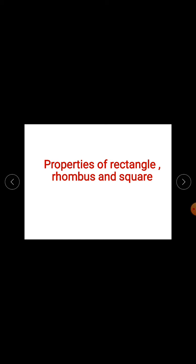let us continue with our fifth chapter of Maths 2, i.e. Quadrilaterals. Our today's topic is Properties of Rectangle, Rhombus and Square. In previous videos, you have studied about properties of Parallelogram. Now, Properties of Rectangle, Rhombus and Square.